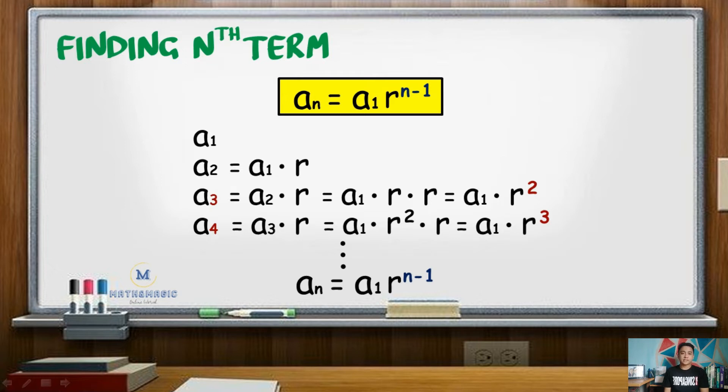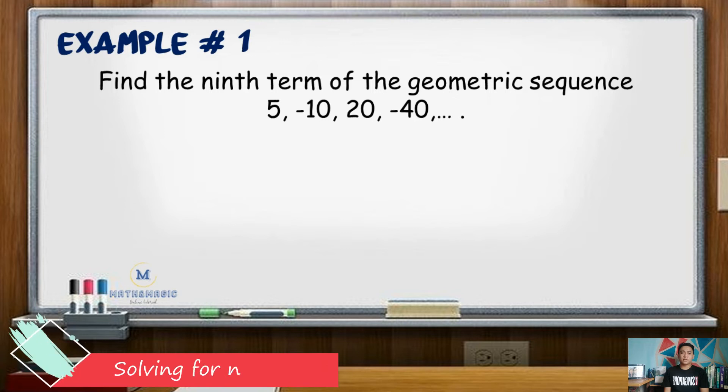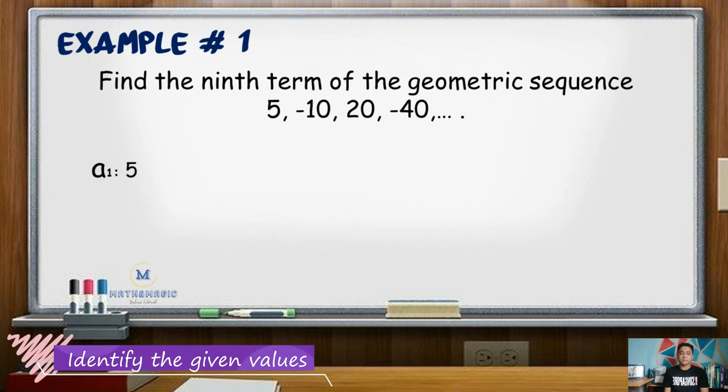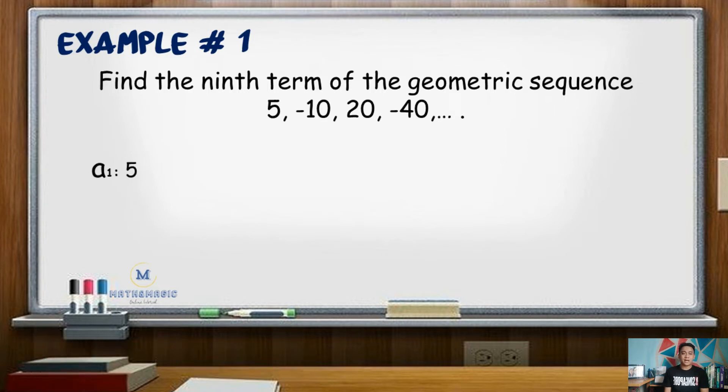For our first example, find the 9th term of the sequence 5, negative 10, positive 20, negative 40, and so on. In this given sequence, first term is 5. Thus, a sub 1 equals 5. To get the common ratio, we divide the second term by the first term. So r equals negative 10 over 5 or simply negative 2. Since we are looking for the 9th term, n here is 9.